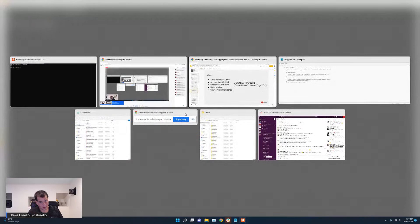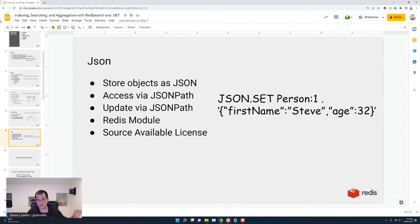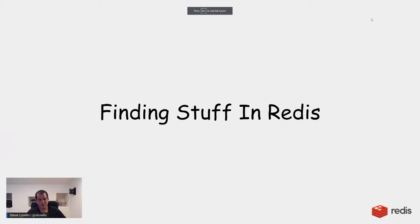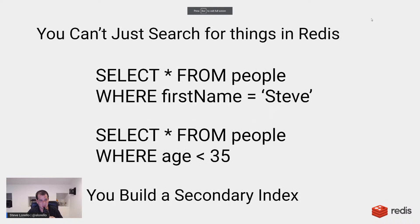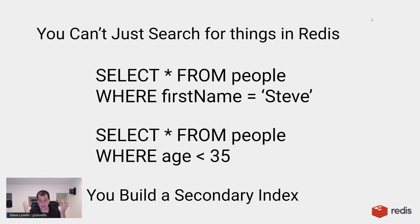So why did we go over all these data structures? Because they become really important when we're talking about finding stuff in Redis, which is the real topic of this talk. Unlike a SQL database, Redis doesn't allow you to just build queries willy-nilly that access data by value. 'SELECT * FROM people WHERE first_name = Steve' or 'WHERE age < 35' just isn't going to work in Redis unless you build a secondary index on top of it. Secondary indexing lies at the heart of this talk.